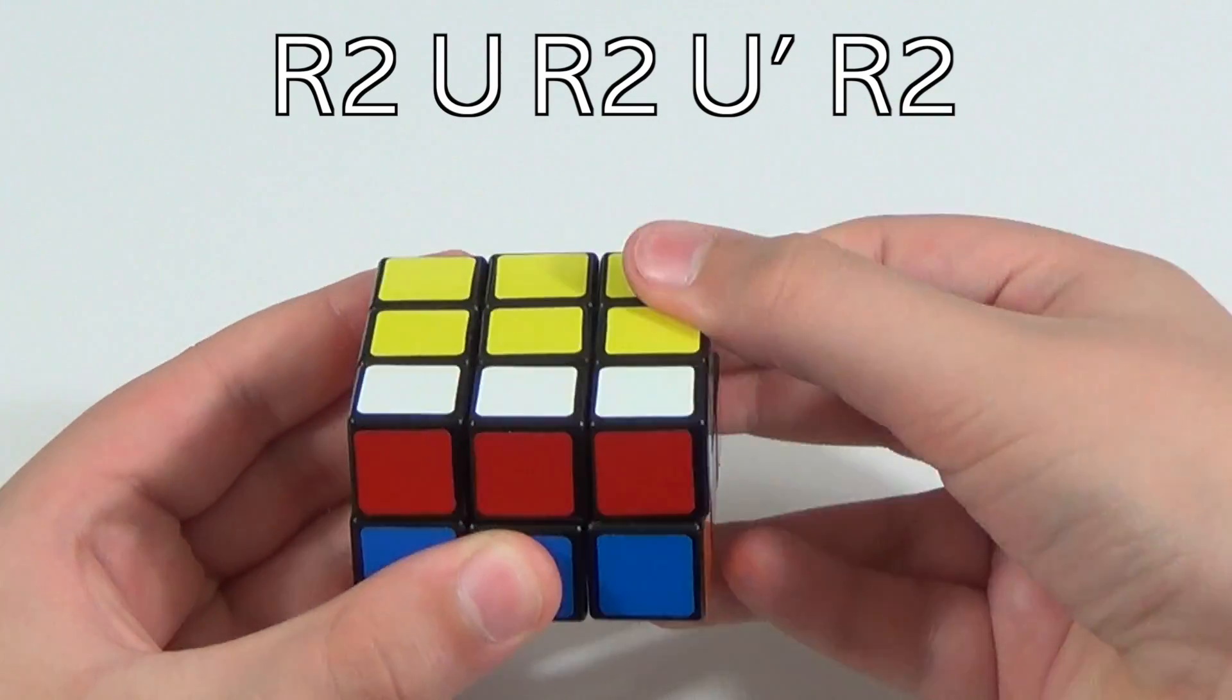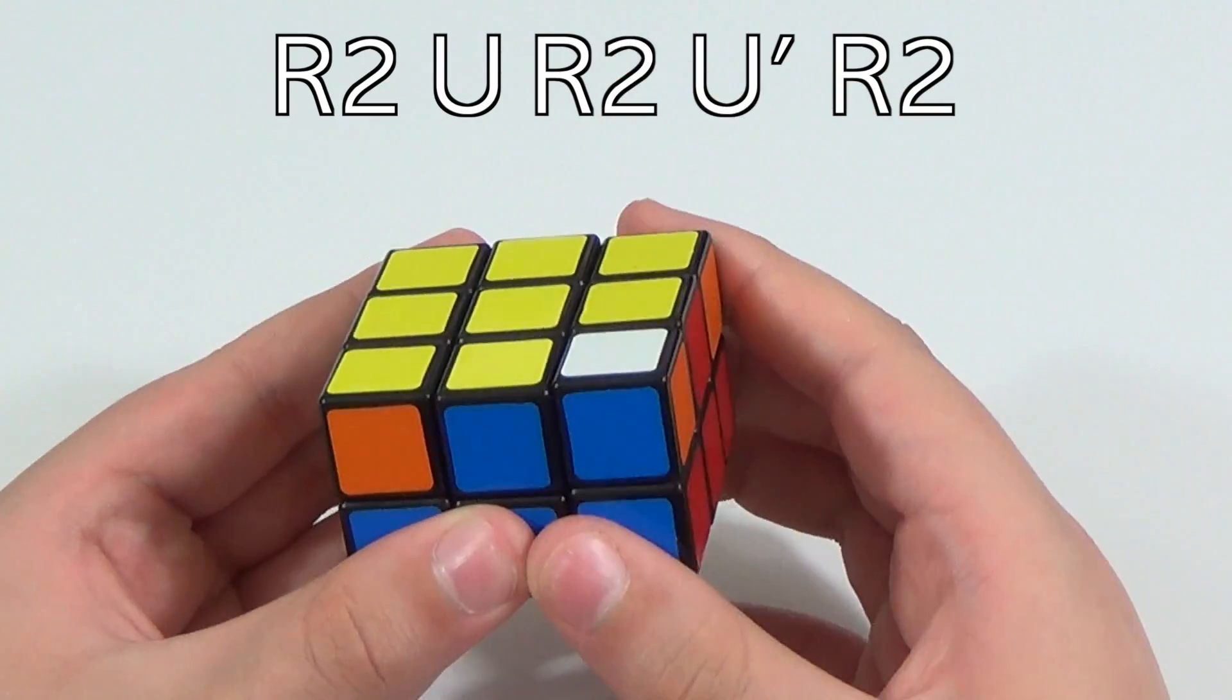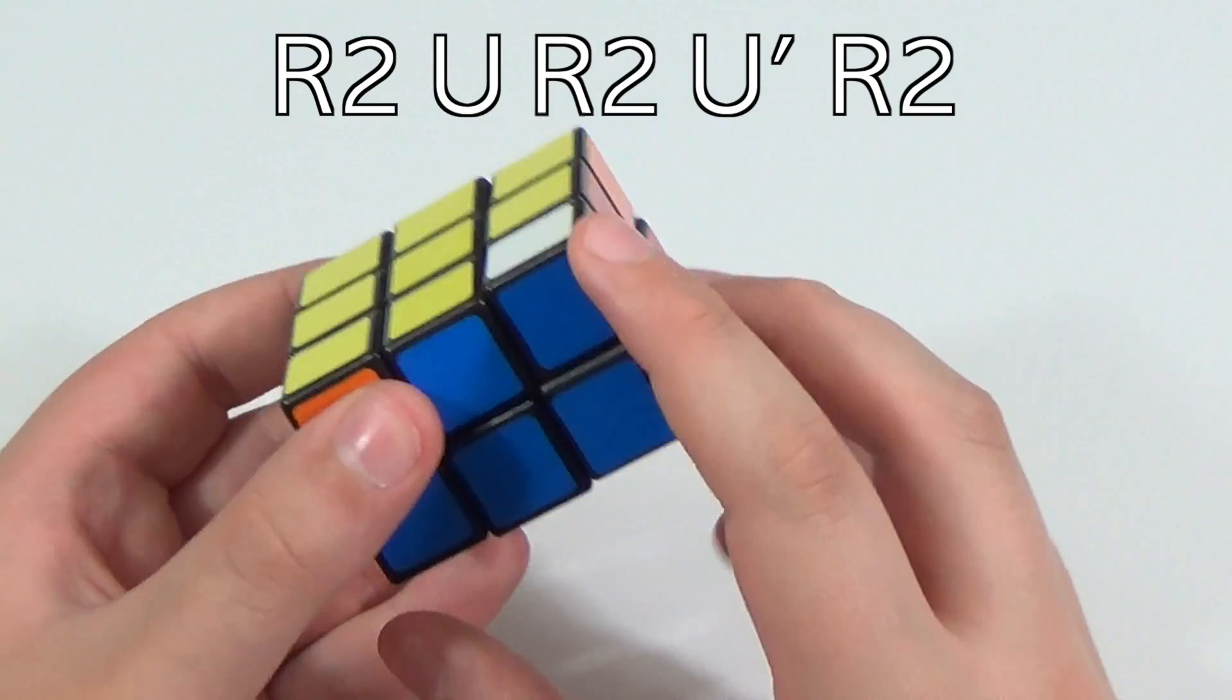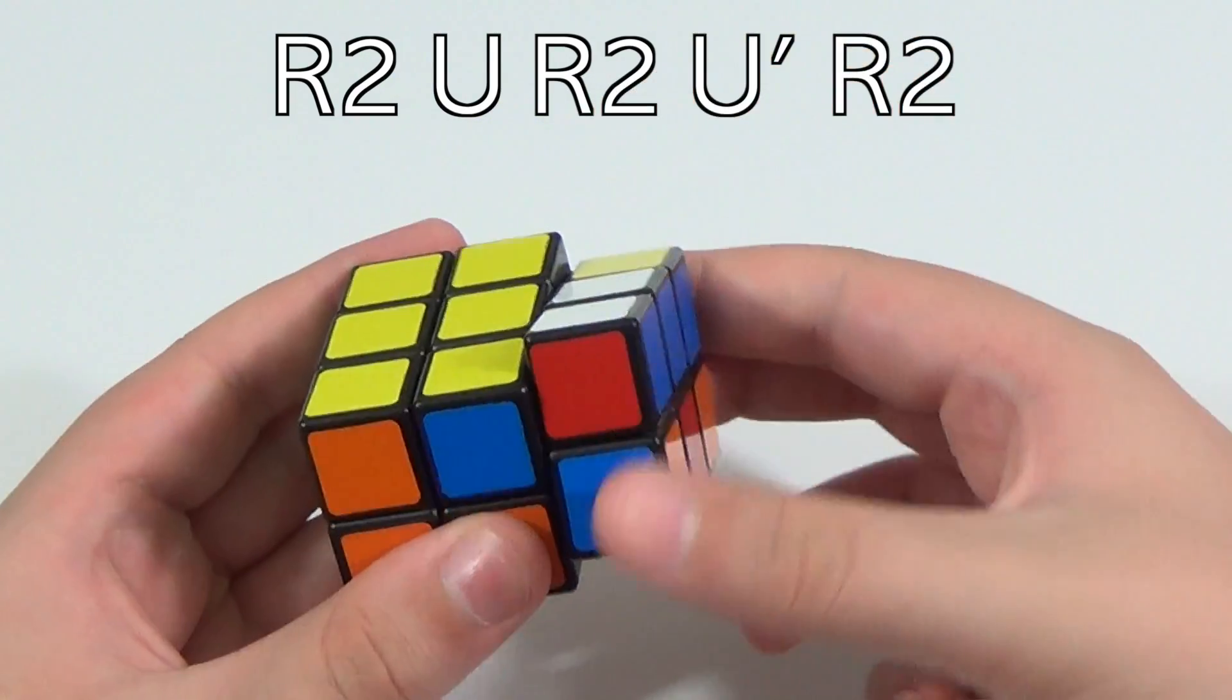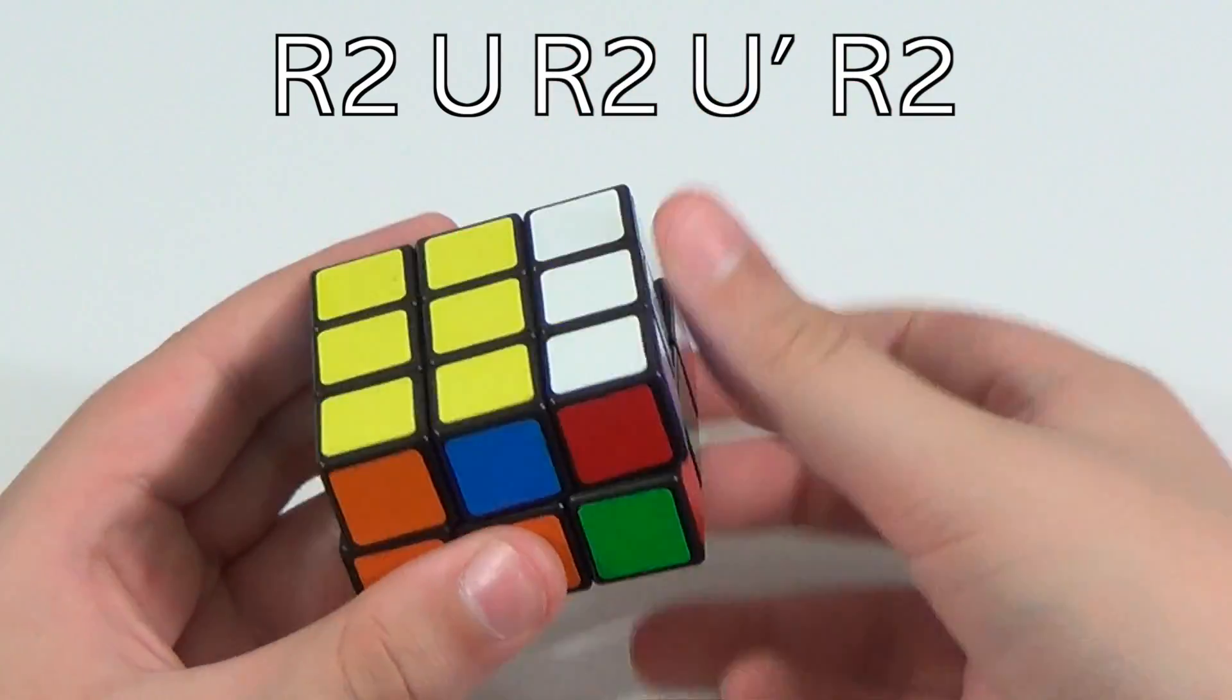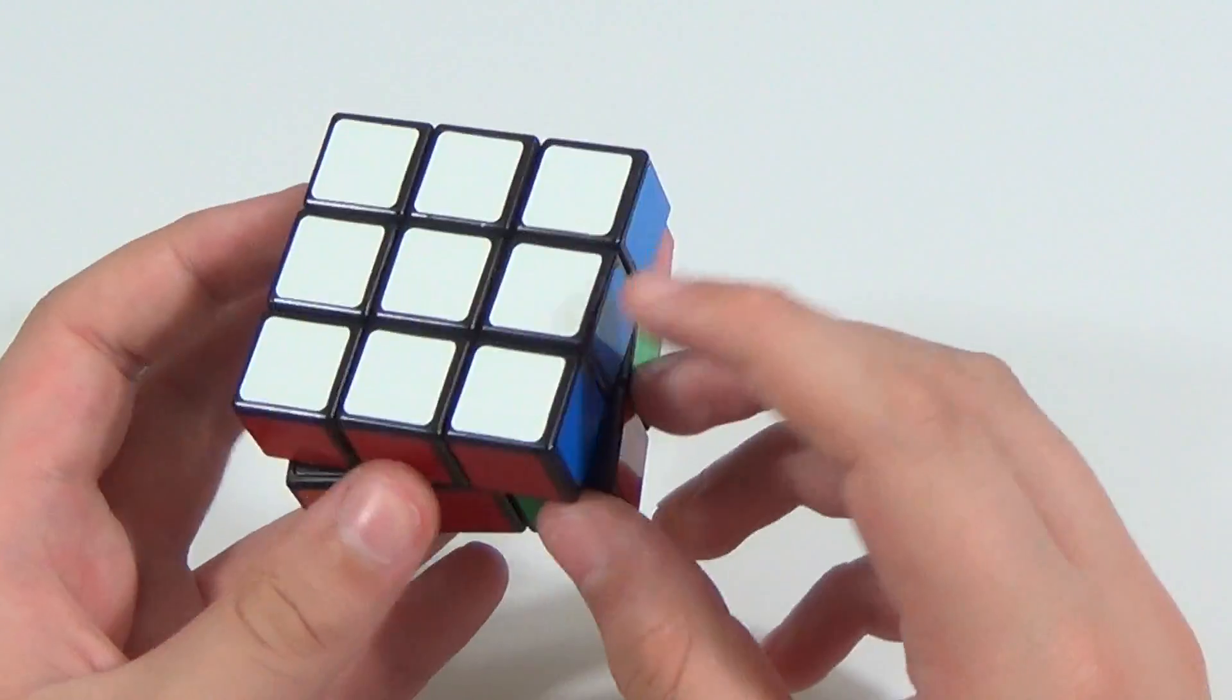r2, u, r2, u prime, r2, which brought out the remaining corner, which you can put that above where it needs to go, and do the same algorithm, just like that. And then we have our bottom layer corners, which form the first layer.